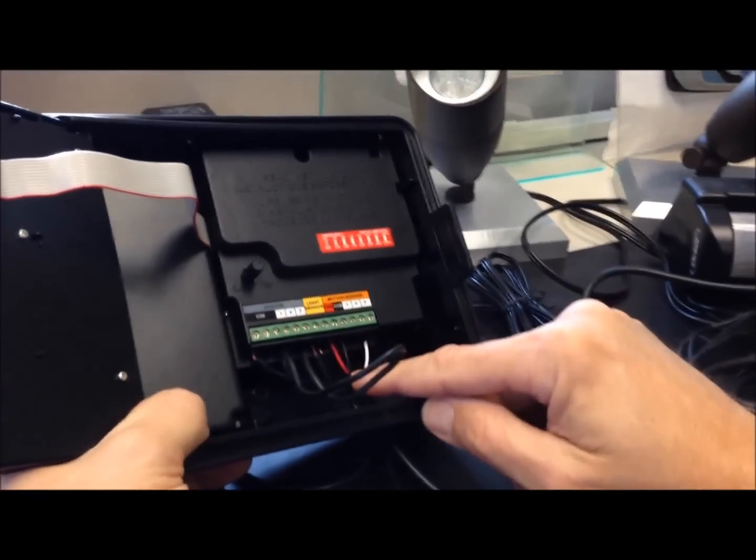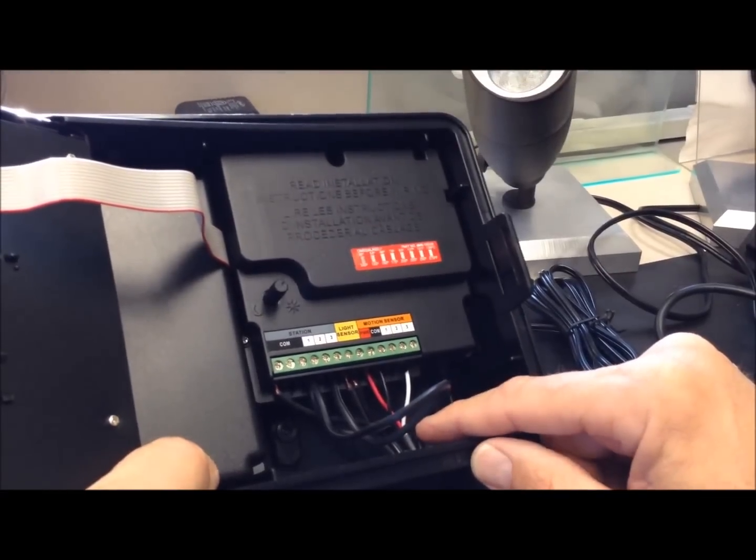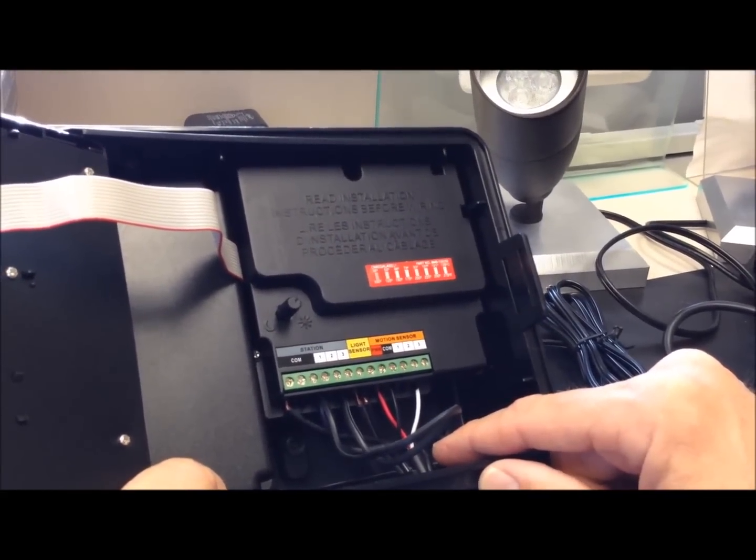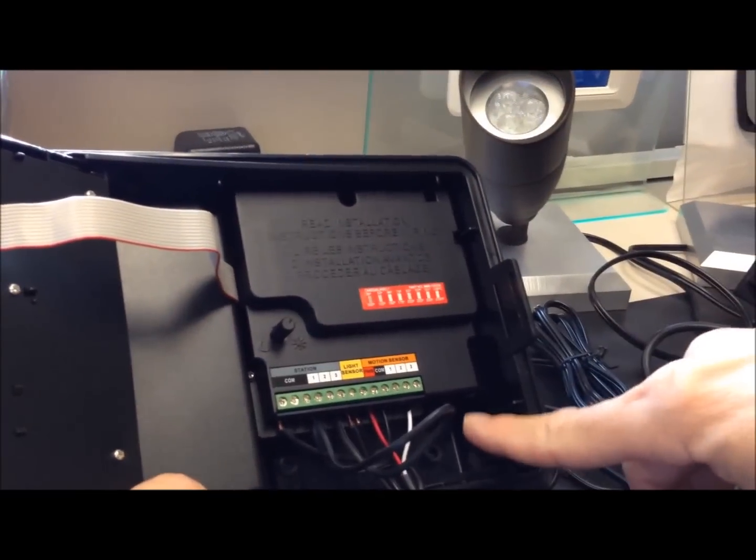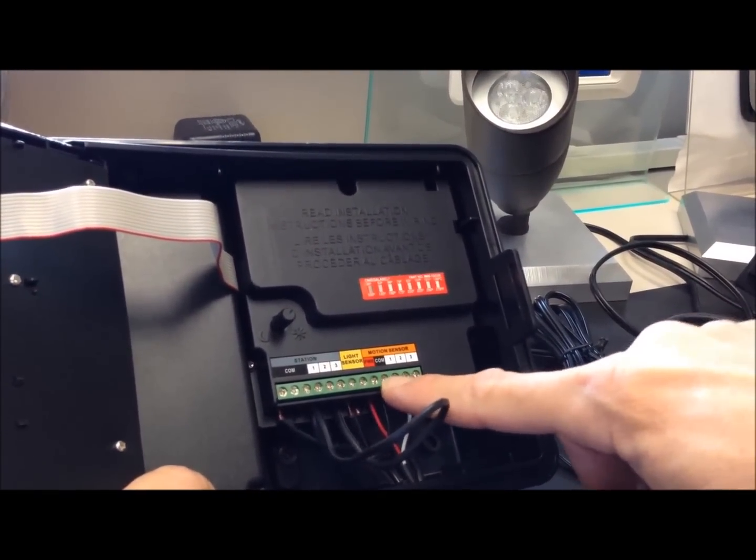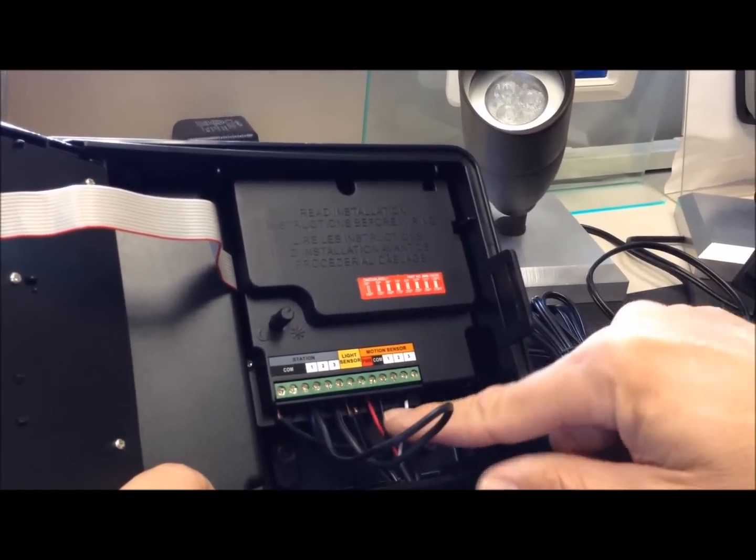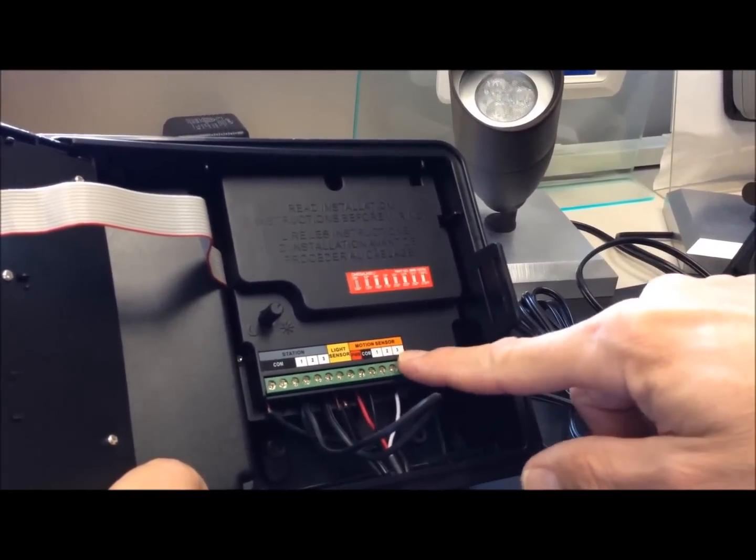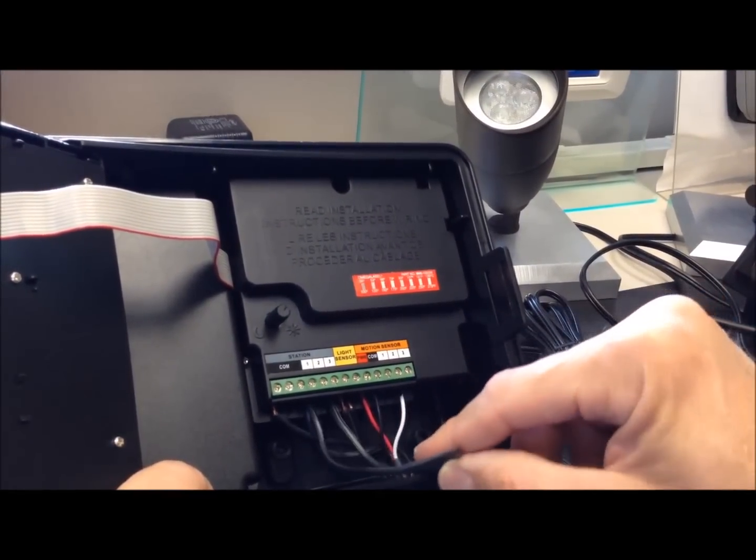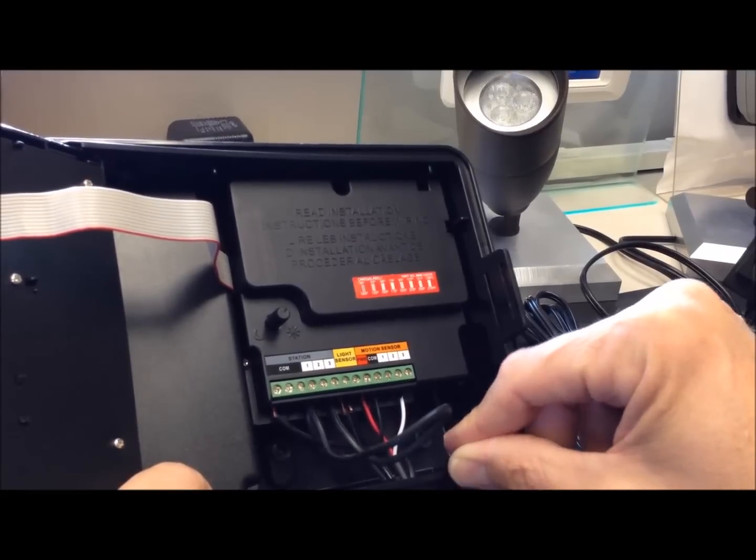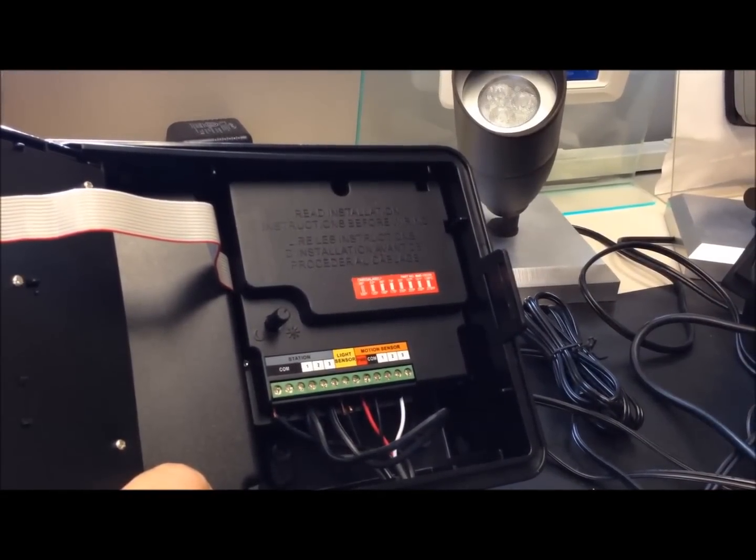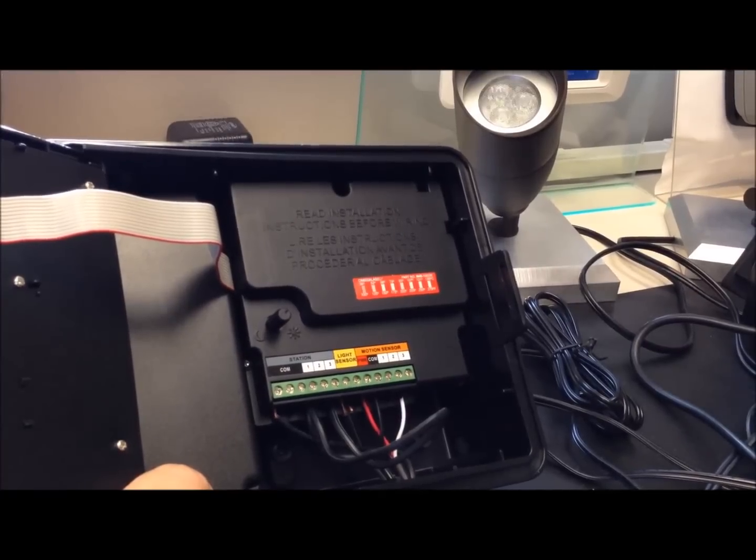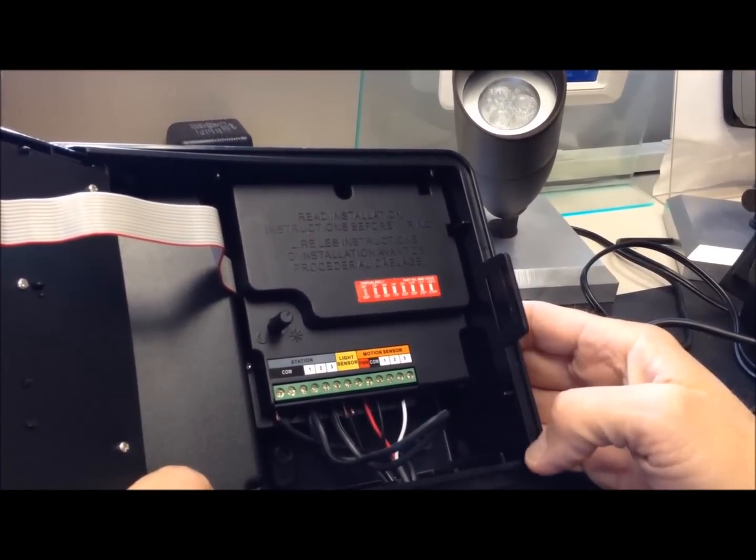There's one other thing that people like to do, and that is to have one motion sensor to activate multiple zones. We can do that by, instead of having multiple motion sensors, which you can do. You can have up to three, and they can be dedicated to all three zones. But you can use one motion sensor here on station three, and by jumping station three to the other stations, you can have all the stations come on when motion sensor is activated.